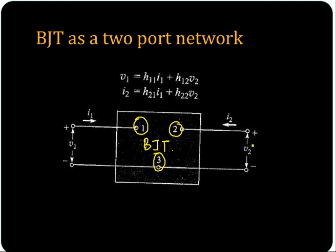V2 is the output voltage and I2 is the output current. So you can represent any network — we are considering BJT — using its H parameters. These are parameters with different units.